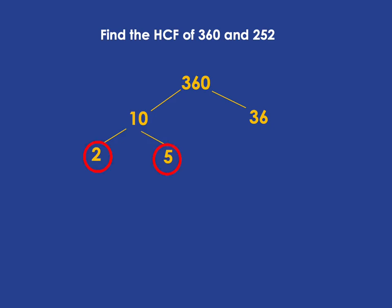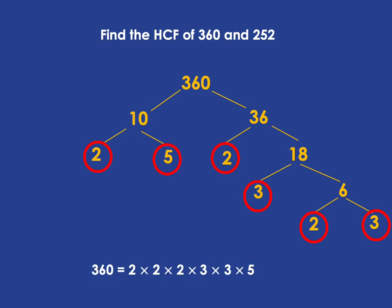Those are prime, so we circle them. 36 can be broken into 2 times 18. 2 is prime. 18 can be broken into 3 times 6 and 3 is prime. And 6 can be broken into 2 times 3, which are both prime. And now everything at the bottom is prime. And so we've got 360 written as a product of prime factors: 2 times 2 times 2 times 3 times 3 times 5.